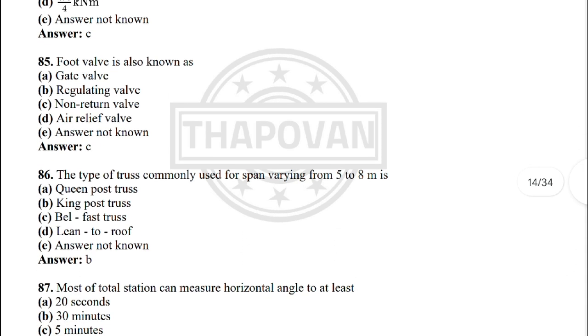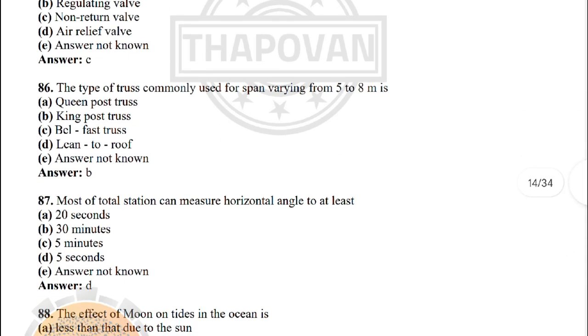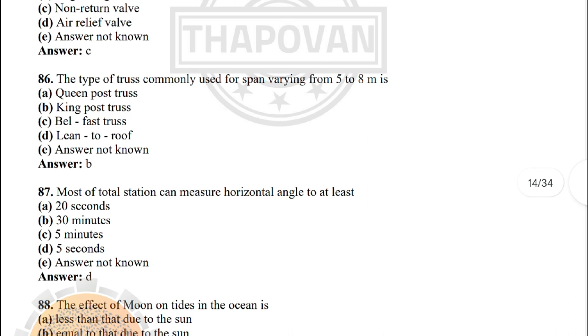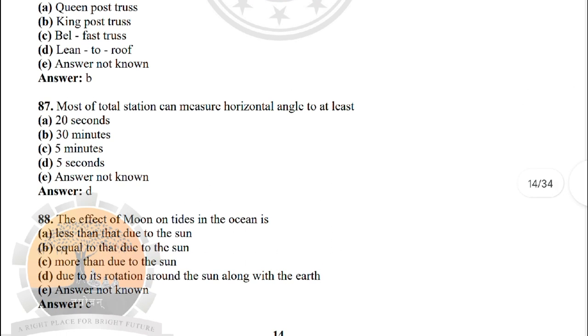Next: foul wall is also known as — the correct answer is option C: non-written wall. Next: the type of truss commonly used for spans varying from 5 to 8 metres is — the correct answer is option B: king post truss.